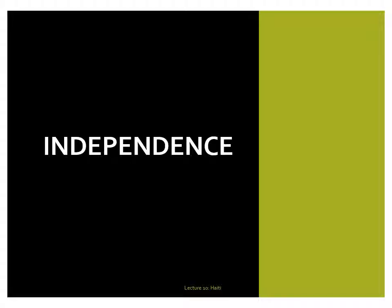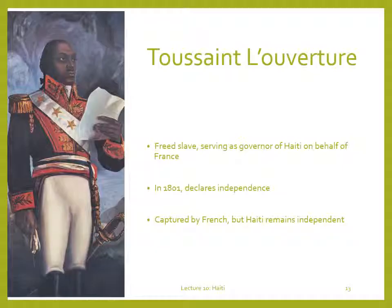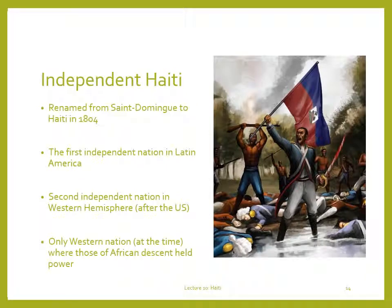By the turn of the 19th century, the tensions among these various classes reached a tipping point. By far, the slave class outnumbered everyone else, but the mulattoes and affranchi classes were growing in power and influence. A freed slave named Toussaint Louverture, who had become governor, took advantage of the chaos to declare independence from France. Though Louverture himself was eventually tried and executed by Napoleon, Saint-Domingue remained independent and was soon renamed Haiti. From 1804, Haiti was the first independent nation in Latin America, the second in the Western Hemisphere after the United States, and the only one where African-descended people held the primary reins of power.